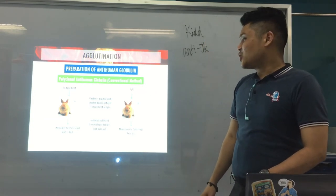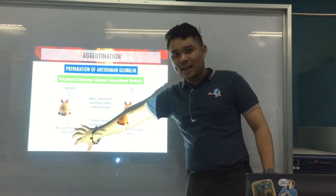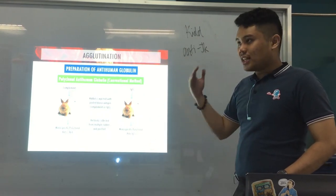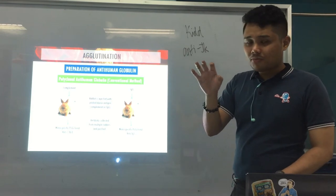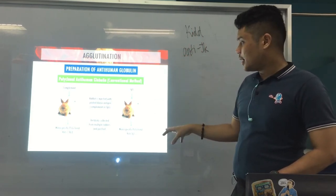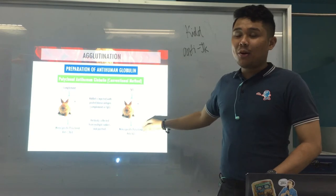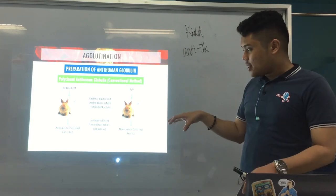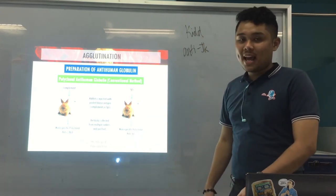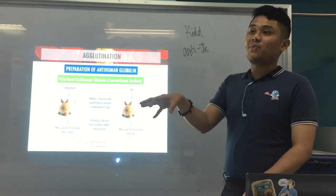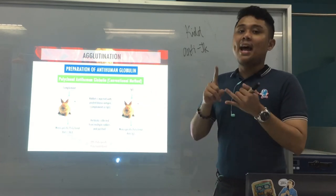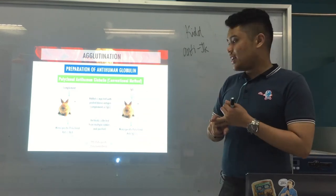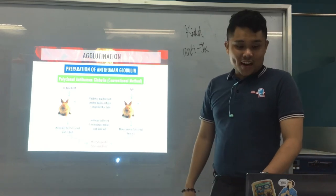You call each one monospecific because each detects either complement or IgG, but polyclonal because they came from many clones of plasma cells. You then combine them together to form a polyclonal blend that is polyspecific — capable of detecting both complement and IgG.